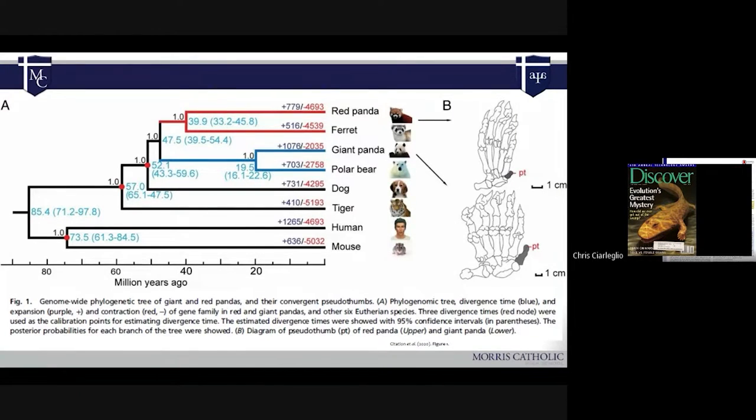Now you might go, wait a minute, like T-Rex has two, but actually during development, it has five and then the others degenerate. And the same sort of process seems to be happening here. If you look back at figure one B, it has five digits. And then it has this like extra thing. It's like polydactyly going on.